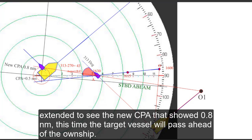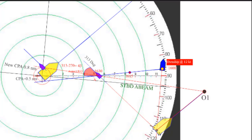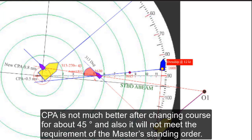This time the target will pass ahead of the own ship. CPA is not much better after changing course for about 45 degrees and also it will not meet the requirement of the master's standing order.